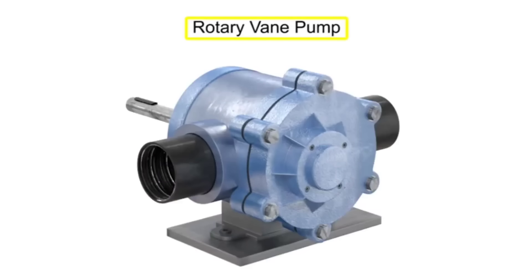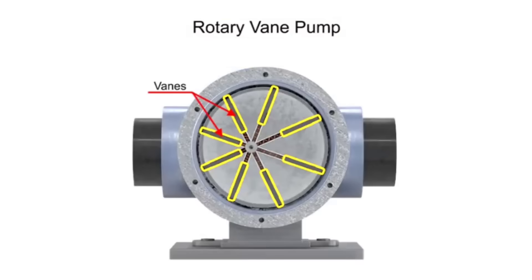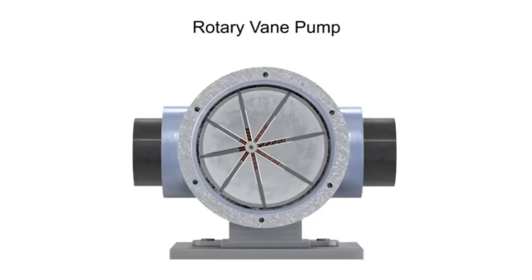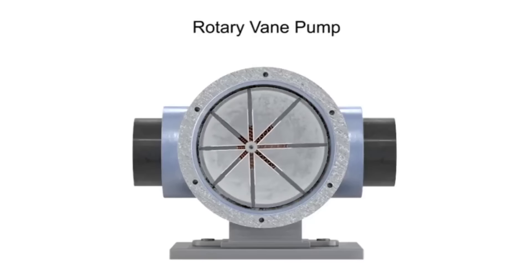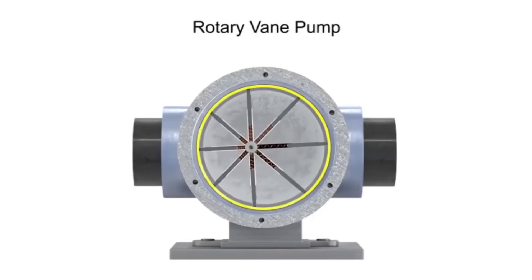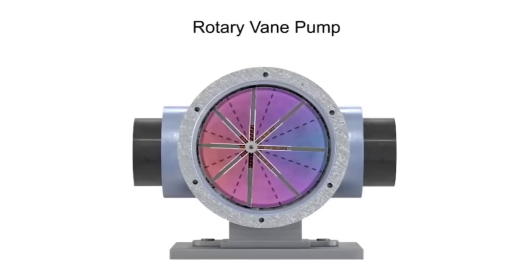A rotary vane pump is a positive displacement pump that consists of vanes mounted to a rotor on an off-center drive shaft. As the shaft rotates, the variable length vanes slide in and out to maintain contact with the pump housing. The tension in the vanes is maintained by either springs or hydraulic pressure. As the vanes rotate, they create chambers of varying sizes within the pump.